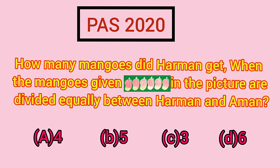Students, now it's time for PASS question. How many mangoes did Harman get? When the mangoes given in the picture are divided equally between Harman and Aman. Let's solve this sum.